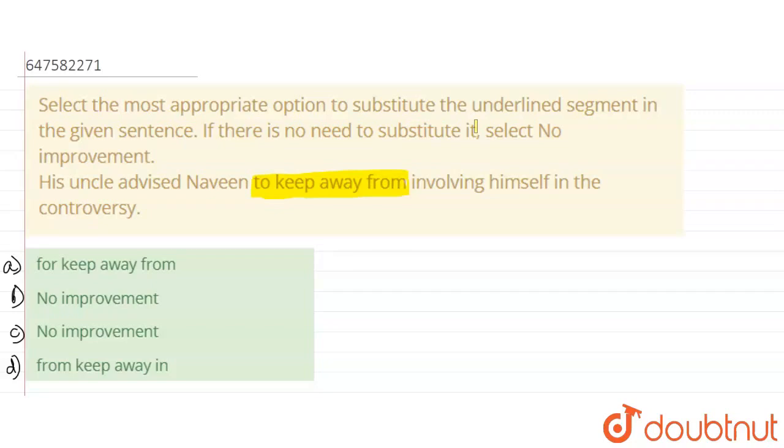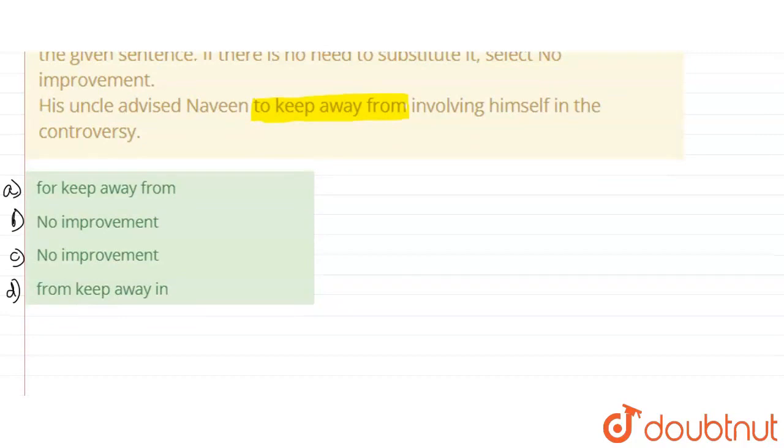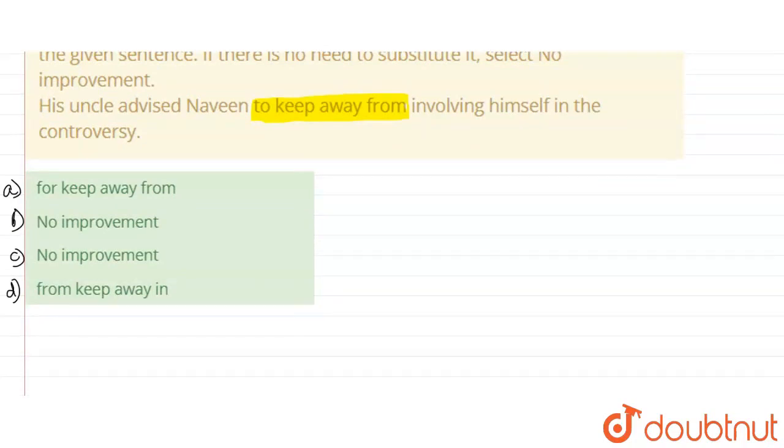If there is no option then we should have no improvement. For keep away from - his uncle advised Naveen for keep away from. For keep away from, for use, basically. If we have no improvement then we should have no improvement. So option A is not possible.